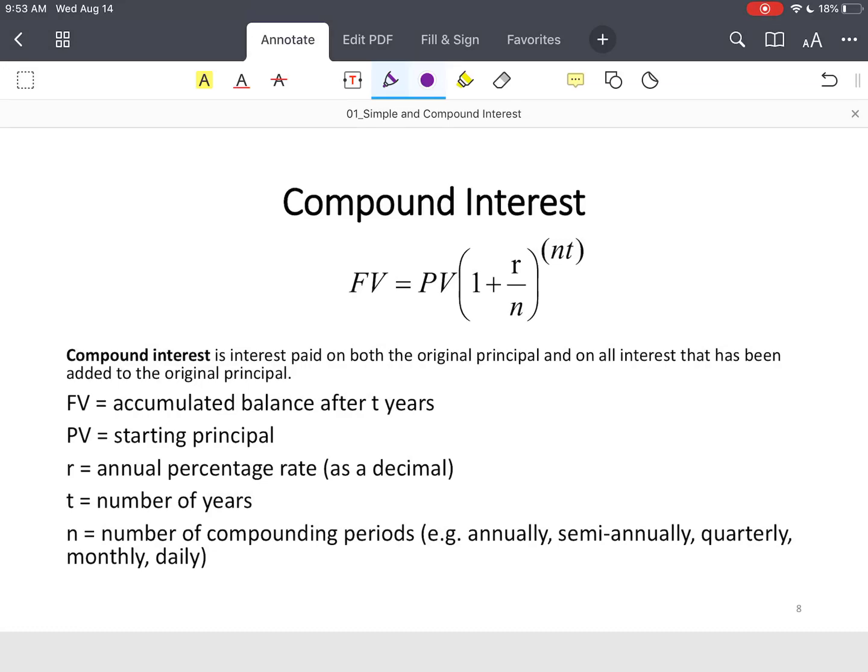All right, now this next piece, compound interest. We did simple interest, now we're going to do compound interest. Now there's one main difference, and it's the distinguishing characteristic. Read the definition. Compound interest is interest paid on both the original principal, right? Simple interest is simply on the original principal. Compound interest is interest paid on both the original principal and on all interest that has been added to the original amount. So compound interest is interest on top of interest, plus interest on top of the principal.